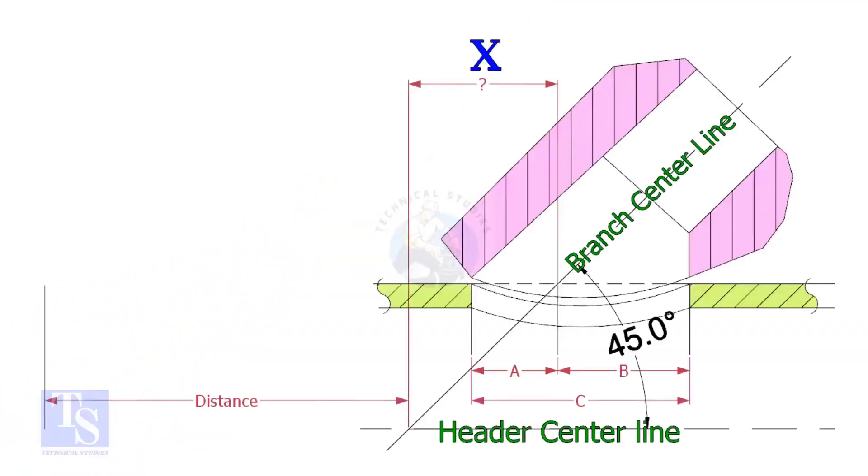Most commonly, Lateralettes are used for 45 degree branch connections. In a drawing, the distance to the center of a Lateralette is given from a certain point.